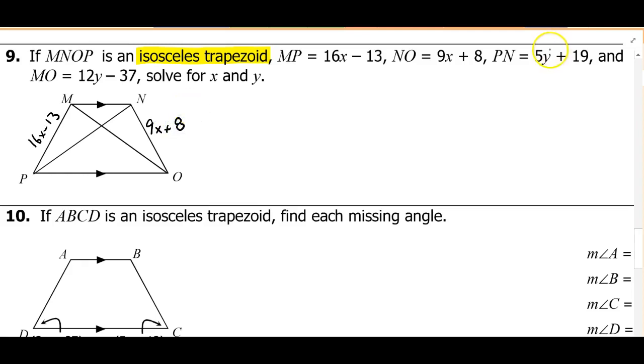And then we have PN is 5y plus 19. So that's going to be this diagonal here. So that's 5y plus 19. And then MO, our other diagonal, is going to be 12y minus 37.